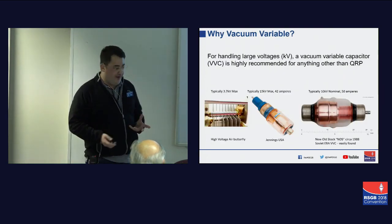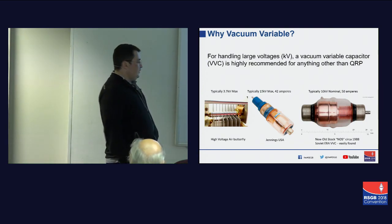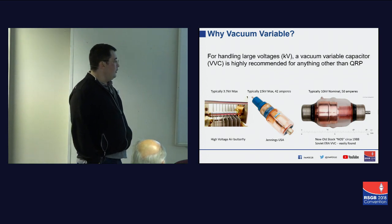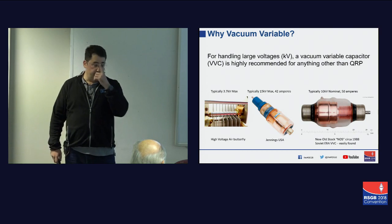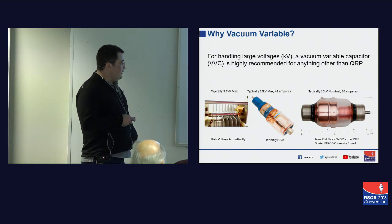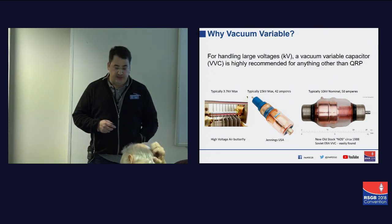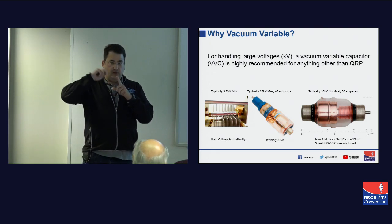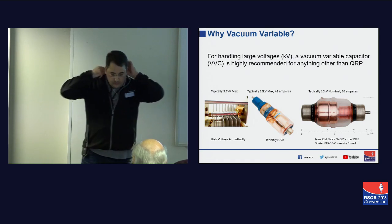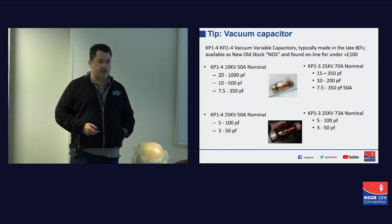This brings me to why we'd want to use a vacuum variable capacitor rather than a high-voltage air butterfly. Simply put, I haven't seen a high-voltage air butterfly going above much more than 7.5 kV, whereas Jennings capacitors or Soviet-era ones are nominally rated at 10 kV — you can comfortably put 15-16 kV through those without the magic smoke coming out. The circulating current is what we need to worry about because that's what can cause arcing. Has anybody ever seen pitting on a capacitor?